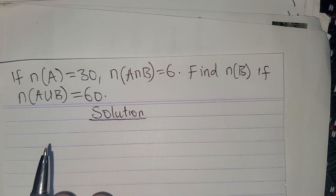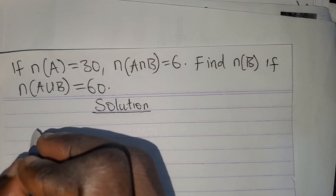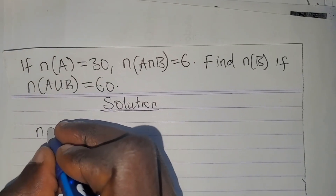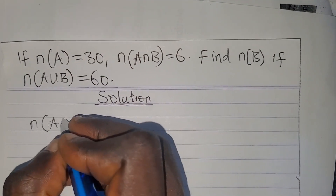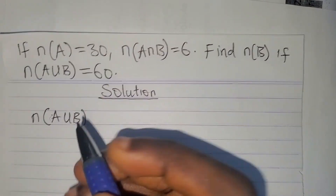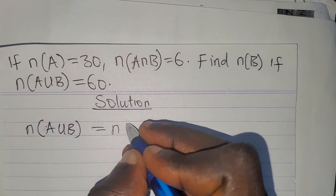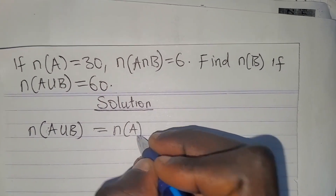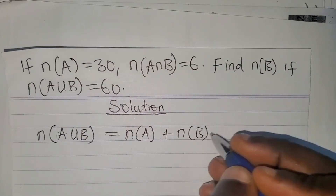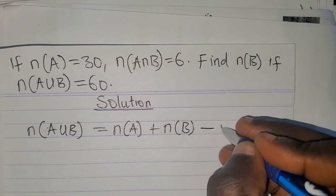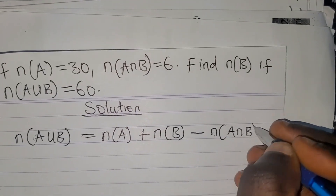This kind of problem has its own formula. The formula says: the number of elements in A union B equals the number of elements in A, plus the number of elements in B, minus the number of elements in A intersect B.